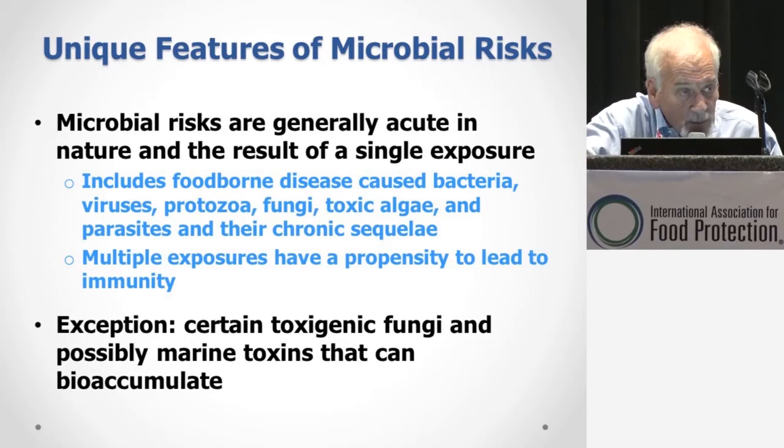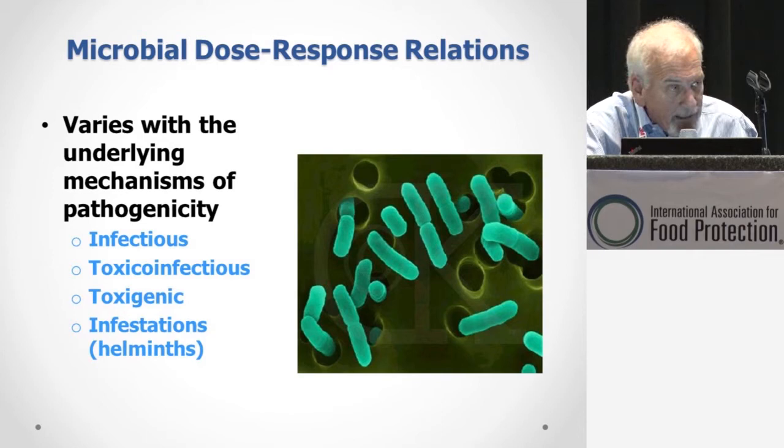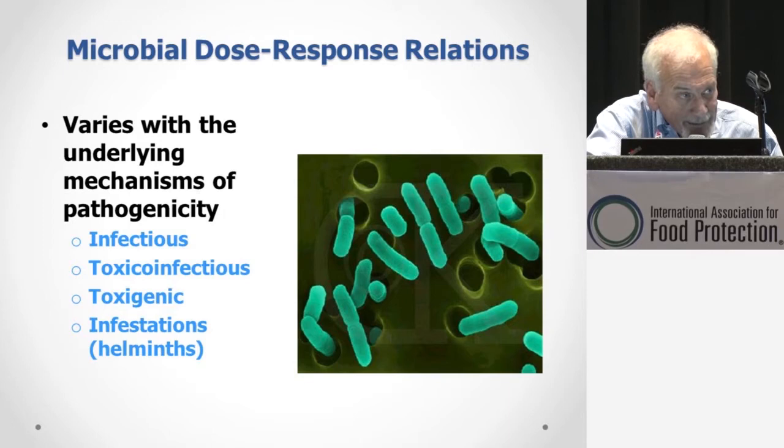It's important here to understand the underlying mechanism of pathogenicity. We differentiate four types if you include parasites, but the important ones for most foods are whether they are infectious, toxico-infectious, or toxigenic. An infectious agent is one that gets into the human body, and the effect can be in the intestinal tract or at a site far away from the original intestinal introduction.